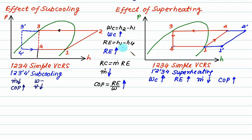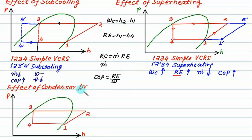For the combined effect of sub-cooling plus super-heating, we gain both advantages. This is the best cycle. Now let us consider the effect of condenser pressure. Starting with a simple VCRS, if the condenser pressure increases, the state point shifts to the right side.